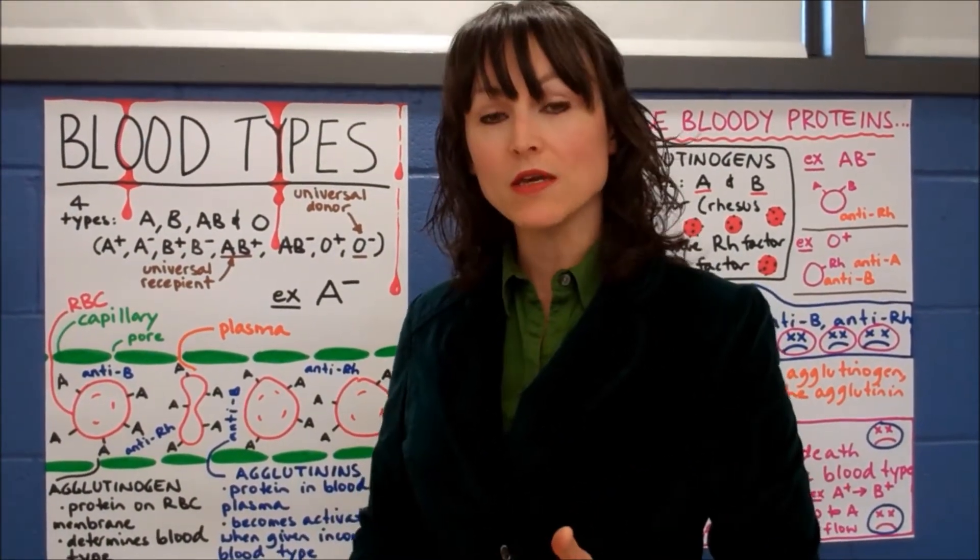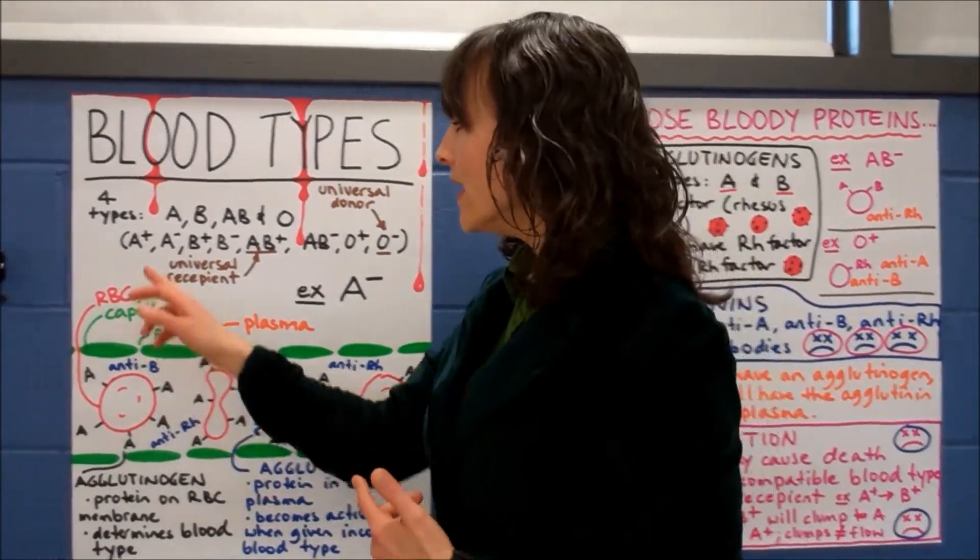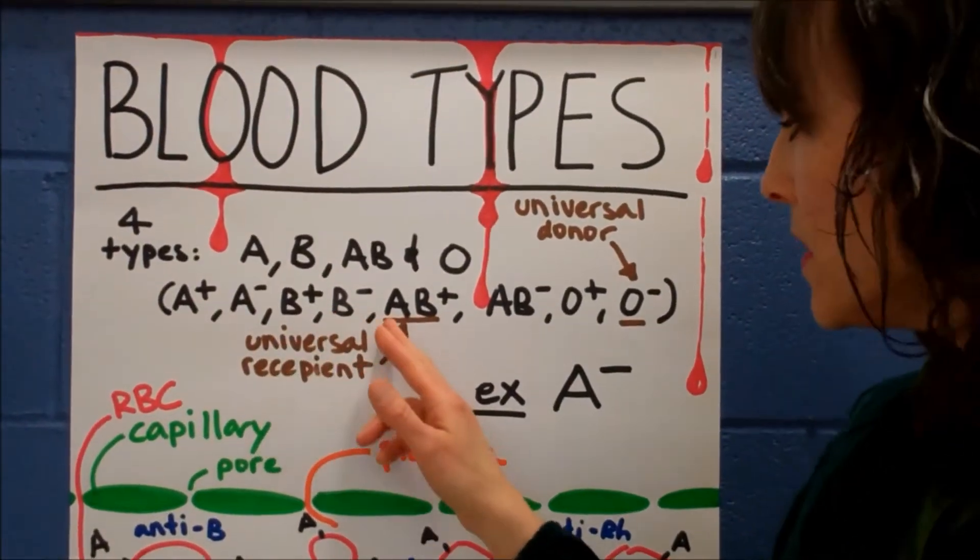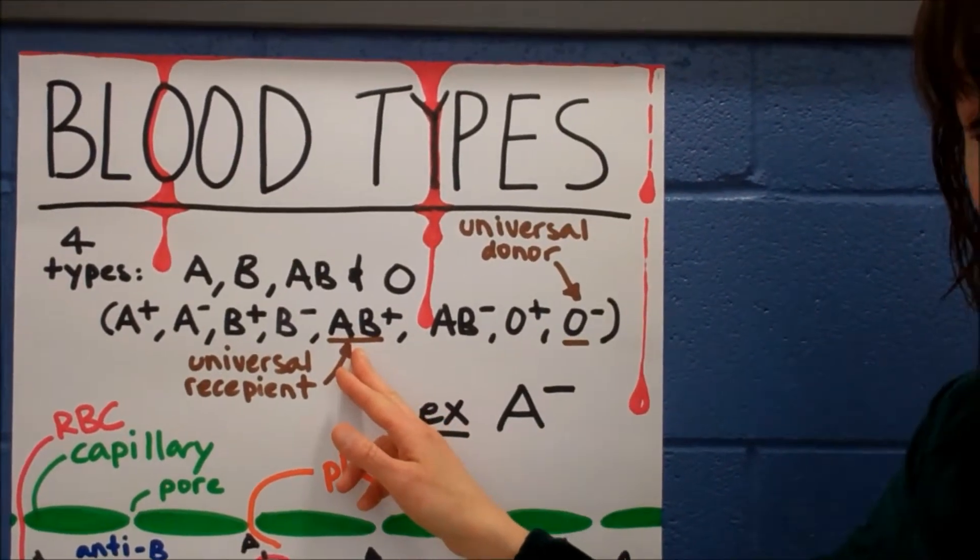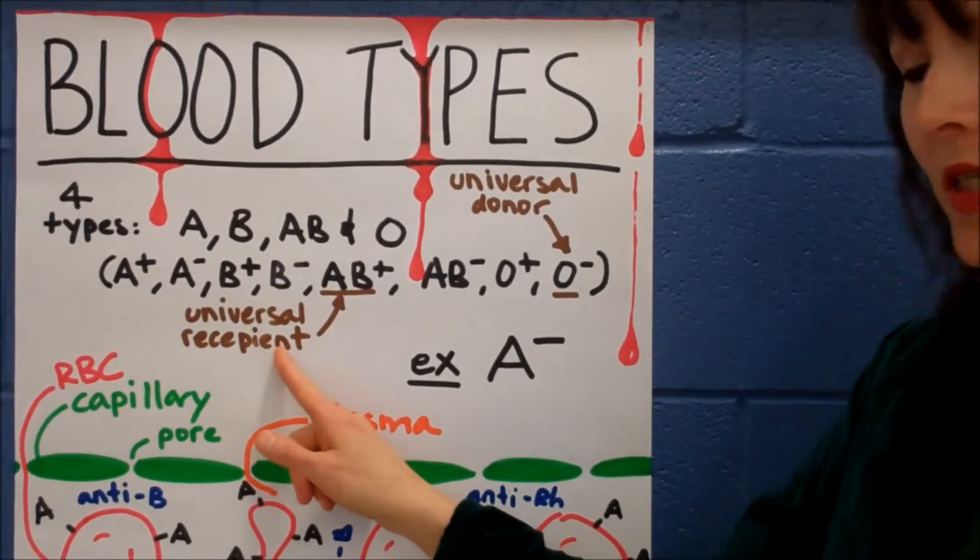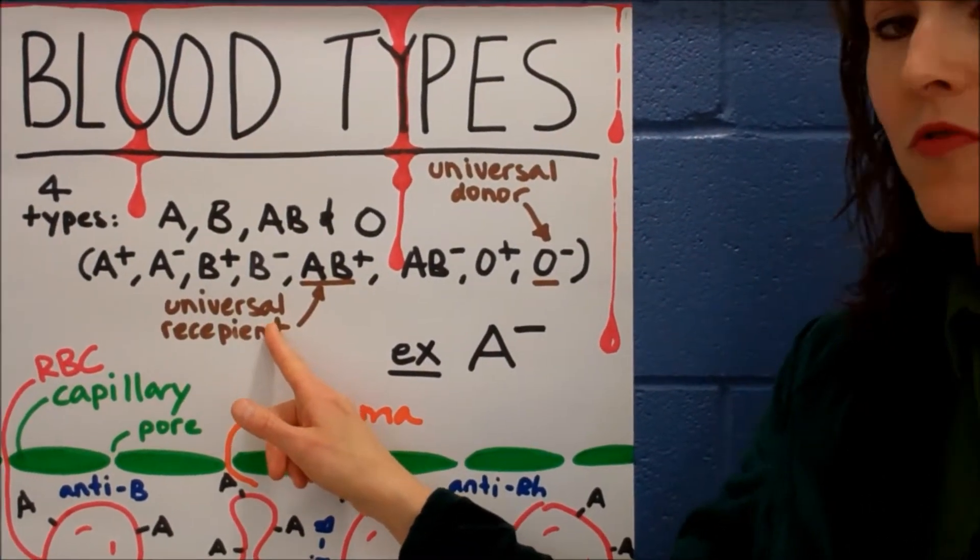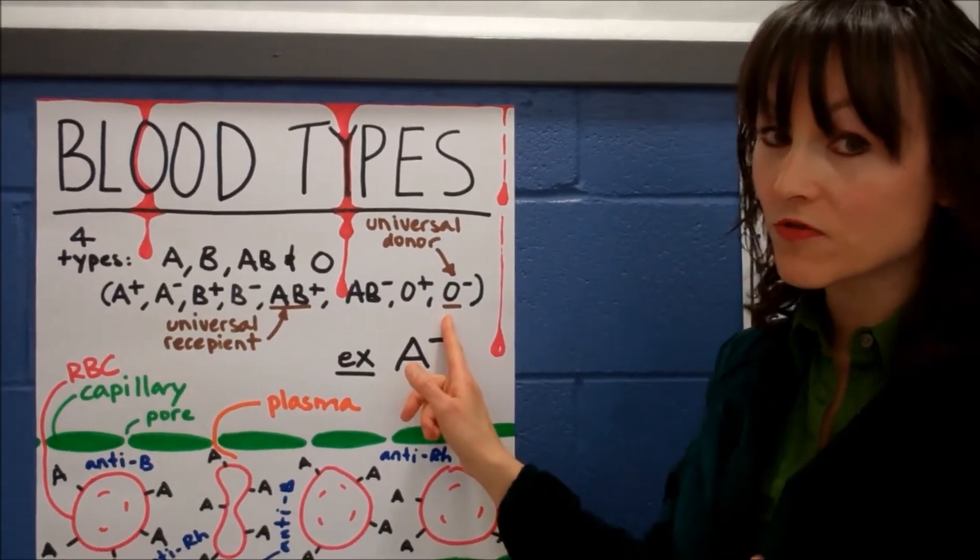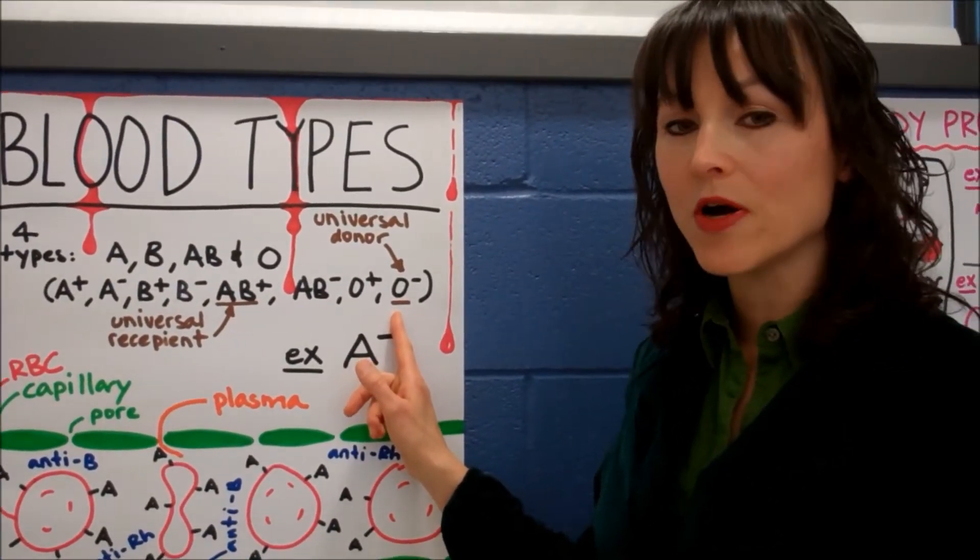So you have A, B, AB, and O. And this translates into A+, A-, B+, B-, AB+, AB-, O+, and O-. Universal recipient, somebody who can get blood from any blood type is AB+. And someone, your best friend ever, who can give blood to anybody is O-.